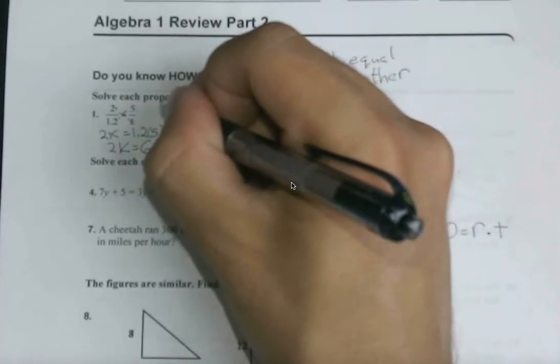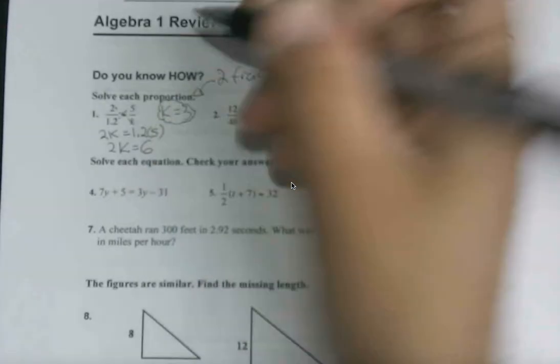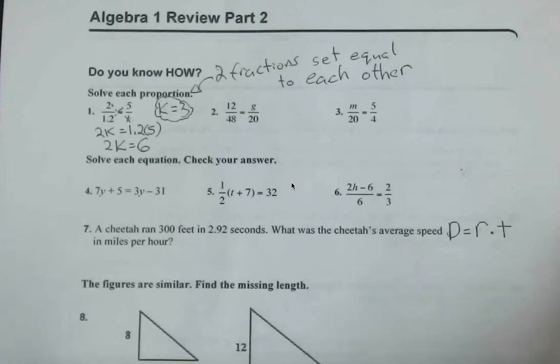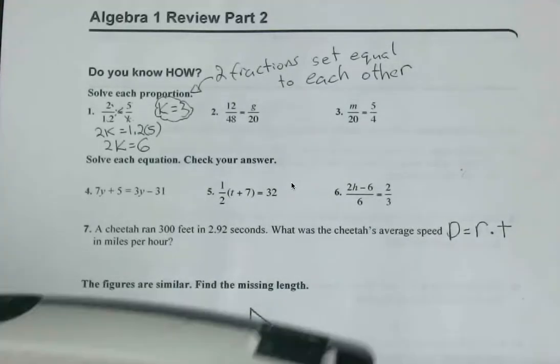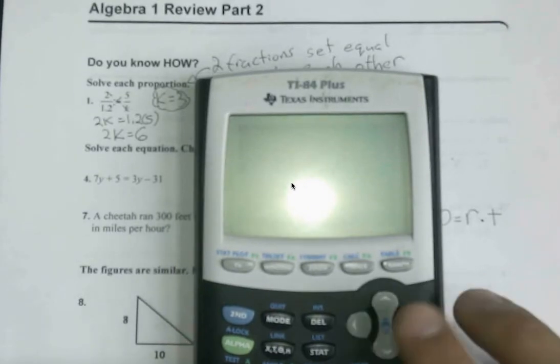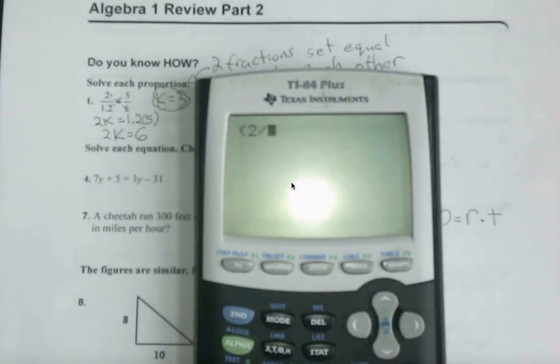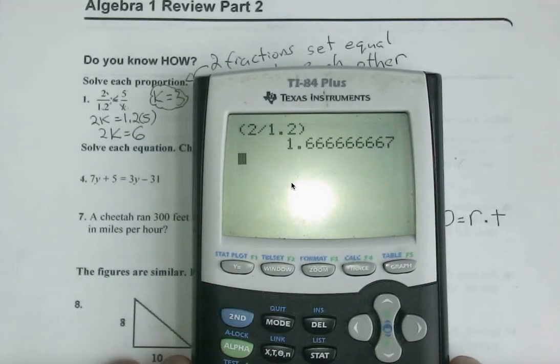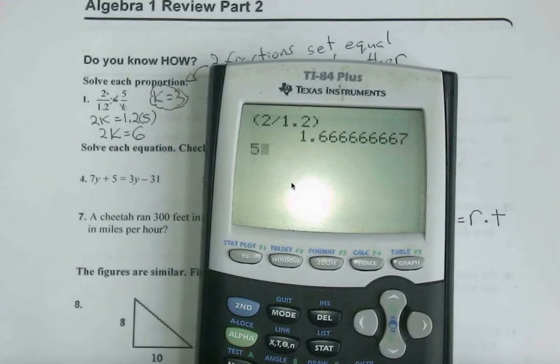So that's our final answer. What's cool is that sometimes you can guess and check on these, but I don't suggest it all the time. For this first problem, we'll check it just to make sure that this makes sense. So we have 2 divided by 1.2, which is 1.6 repeating, and if we were to have 5 divided by 3, that's the same idea.